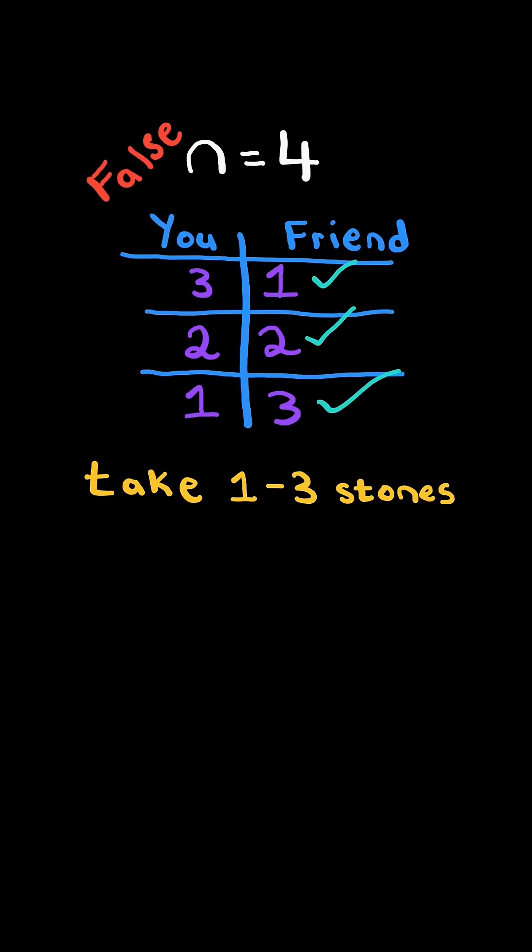Return true or false if you have a chance of winning. We will solve this in O of 1 time.